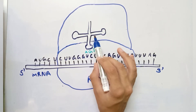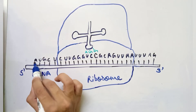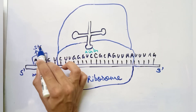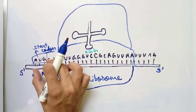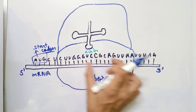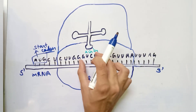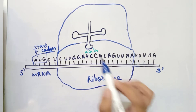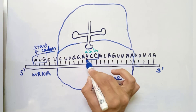Now, how does the tRNA do this? The tRNA first comes to the mRNA and looks for the start codon. A start codon is present in the mRNA which initiates the translation process. The start codon is AUG. The tRNA will then choose a codon — for example, it may come and choose the codon UCC.